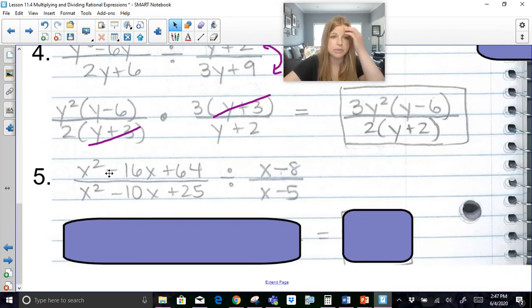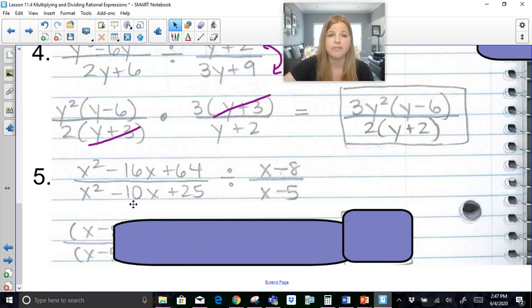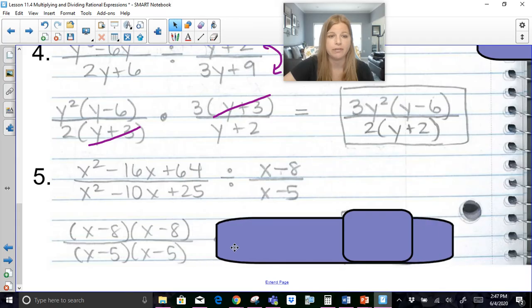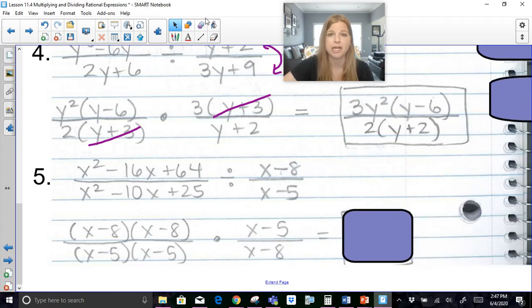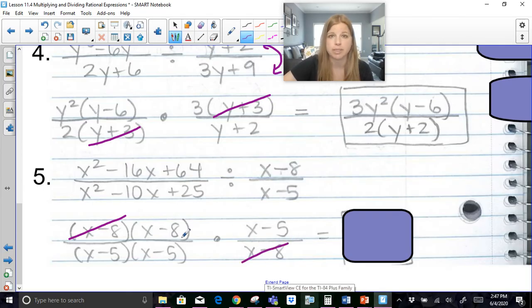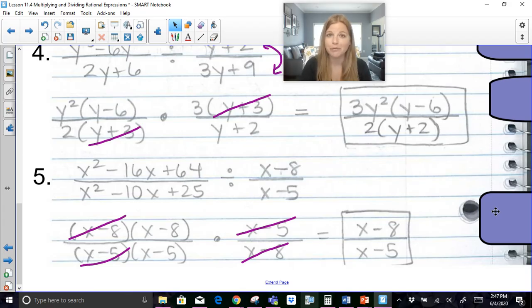Last one for us. So x squared minus 16x plus 64. Factor pair of 64 that gives me negative 16 would be a negative 8 and a negative 8. A factor pair of 25 that gives me negative 10 would be negative 5, negative 5. Change the division to a multiplication. Do the reciprocal of the second fraction, which there's nothing to factor. Remember I told you just before, it's a 1 to 1 deal. So if I cross out one of these x minus 8s on top, one goes at the bottom. I can't just cross them all out. One of the x minus 5s on the bottom, one on top, and I'm left with just x minus 8 over x minus 5. I hope this video was helpful for you. Thank you so much for watching. If the factoring is really still a struggle for you, make sure you go back and watch my other factoring videos for help. Bye.